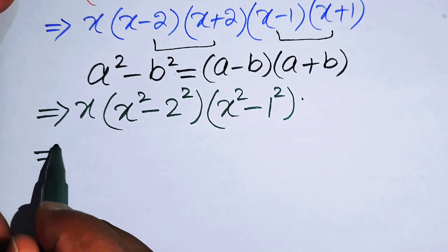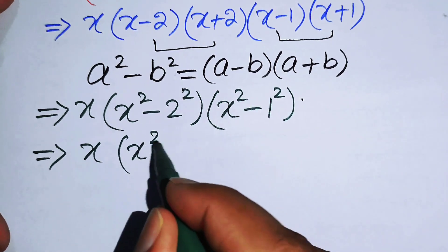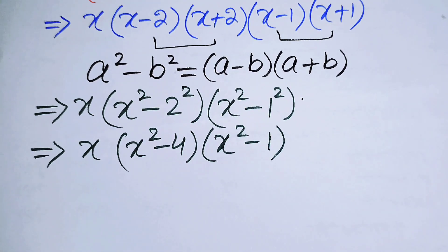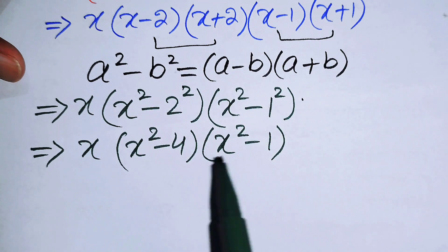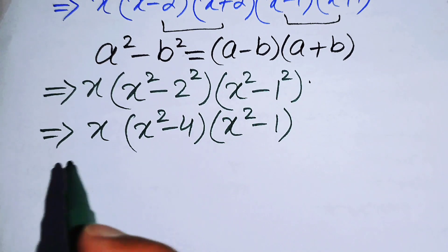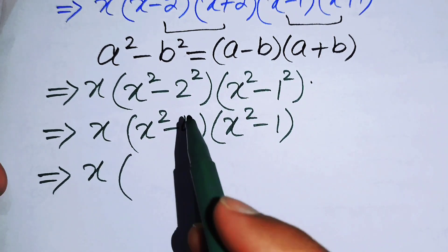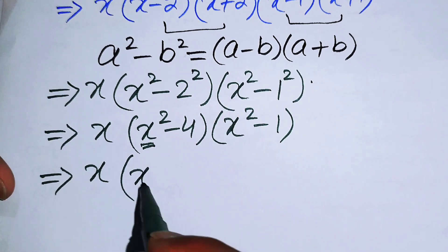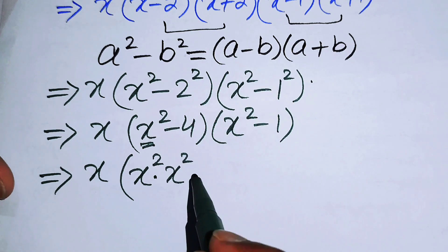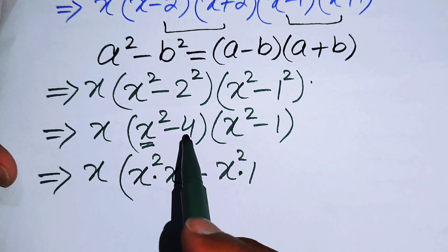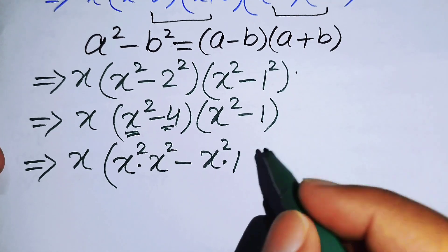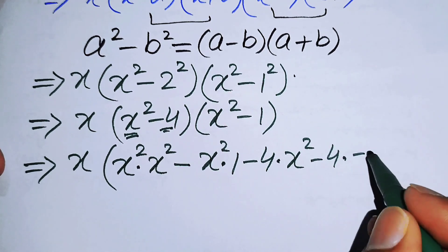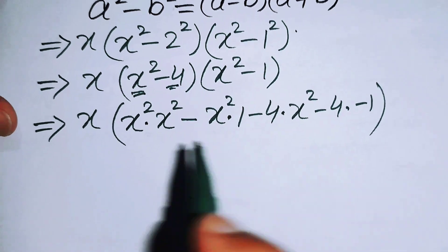After simplification we have X times (X squared minus 4) times (X squared minus 1). Now multiplying these two factors together: X squared times X squared gives X to the power 4, minus X squared times 1 gives minus X squared, then minus 4 times X squared gives minus 4X squared, and minus 4 times minus 1 gives plus 4.